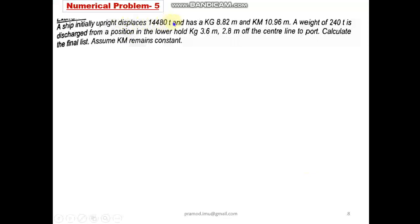One more question. A ship initially upright displaces 14,480 tons and has KG 8.82, KM 10.96. A weight of 240 tons is discharged from a position in the lower hold, KG 3.6, 2.8 meters of central line to port. Calculate the final list. So this question is opposite of the previous question where we are removing a mass, just like we are discharging a container.